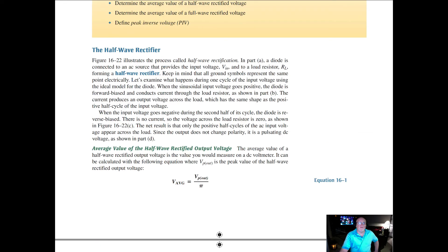The average value of the half wave rectifier output is the value you would measure on a DC voltmeter. It can be calculated using the following equation, where Vpeak out is the peak value of the half wave rectified output. If we can measure what the peak output should be, divide it through by pi.